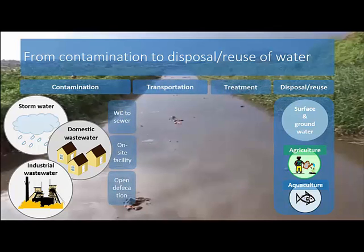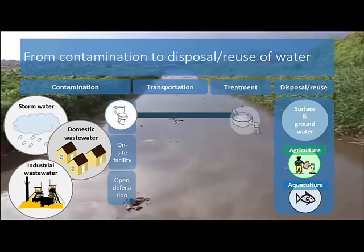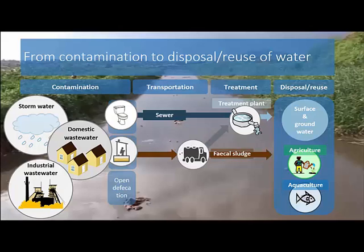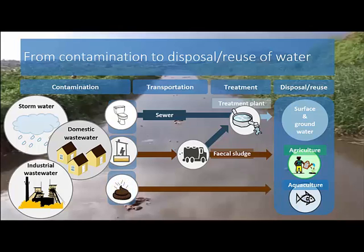Sanitation systems in developed countries are often centralized systems that cover the process from toilet to sewer and finally to an appropriate treatment plant. In low- and middle-income countries, sanitation systems are characterized by aging and overloaded wastewater treatment plants, coupled with limited fecal sludge collection and treatment from on-site facilities. Open defecation is a common practice.